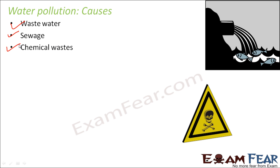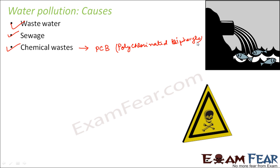Chemical wastes mostly come out of factories and industries. These chemical wastes can contain highly toxic chemicals like polychlorinated biphenyls, abbreviated as PCB. PCBs are one of the chemicals which cause severe water pollution. They are extremely harmful and are often given out by various factories and industries, making them highly toxic chemicals.